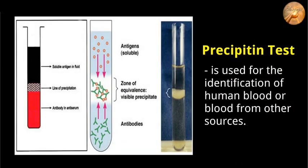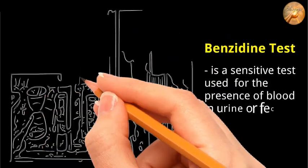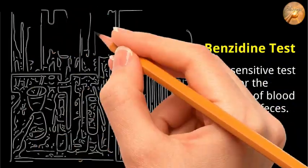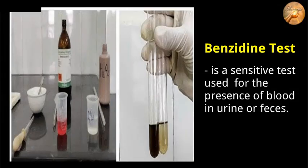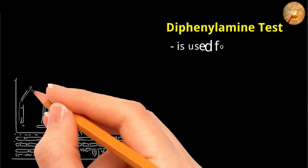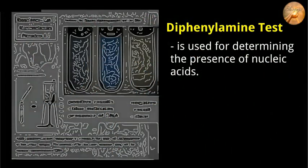The benzidine test is a sensitive test used for the presence of blood in urine or feces, based on the production of a blue color upon contact with a solution of benzidine, hydrogen peroxide, and glacial acetic acid. The diphenylamine test is used for determining the presence of nucleic acids; the presence of DNA will turn the solution blue — the more DNA present, the darker the color.